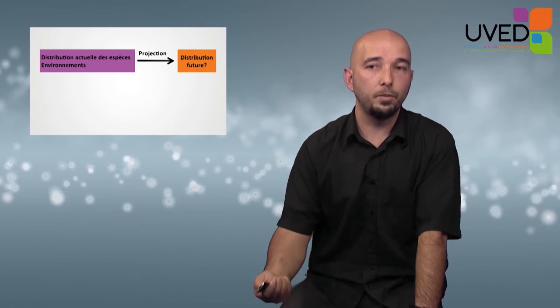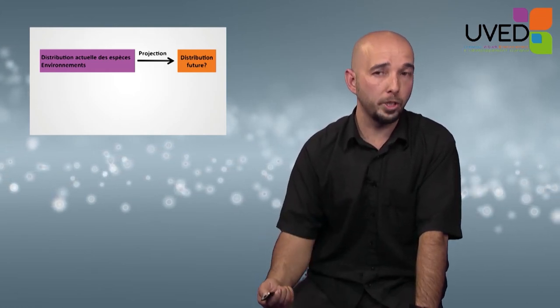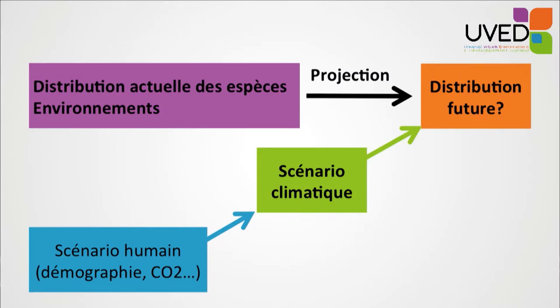Looking at the future, we now have statistical models whereby, with knowledge of the distribution of species in space, we can associate the presence or absence of a species with a number of climatic and environmental variables. If we are capable of projecting those variables into the future, we can project the future distribution of species in space. These projections are based on climatic scenarios, which in turn rely on scenarios regarding our own demographic data and use of fossil fuels.